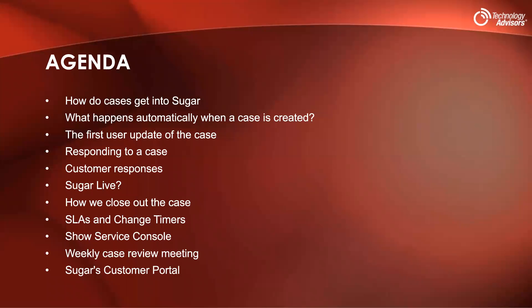We're going to talk about how cases get into Sugar, what happens automatically with the Sugar BPM process, the first user update of the case and what fields are required, how we respond to a case, and what happens when a customer responds via email or the portal. We have Sugar Live which I'll demo at that point, then we'll talk about how we close out cases, look at SLAs and change timers, the service console, our weekly review meetings, and potentially the Sugar customer portal — though we may show that a bit earlier.